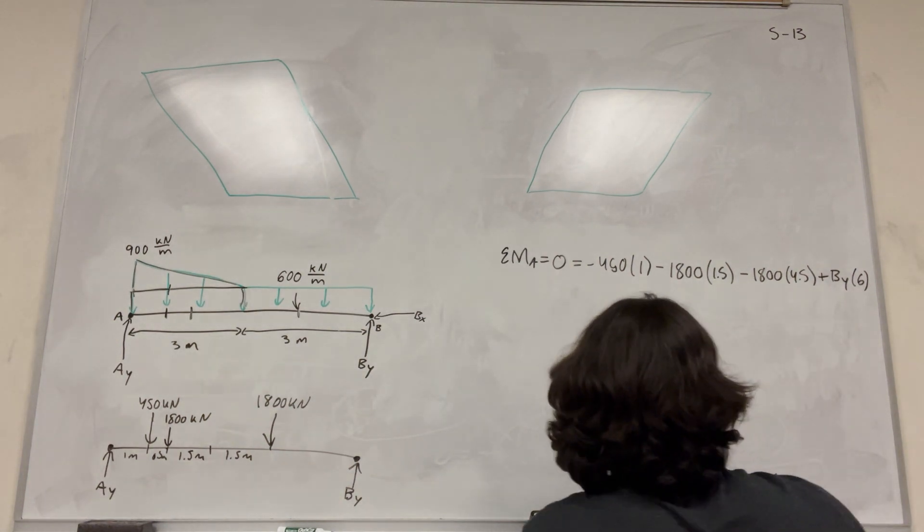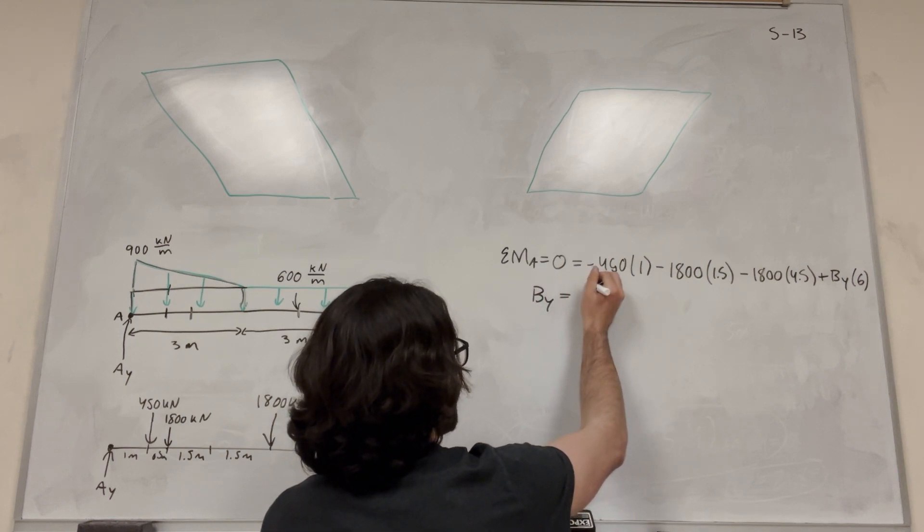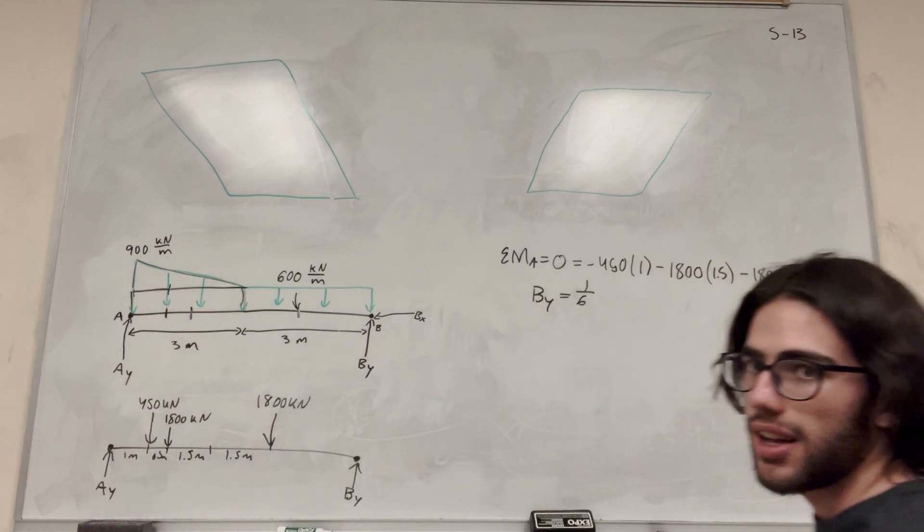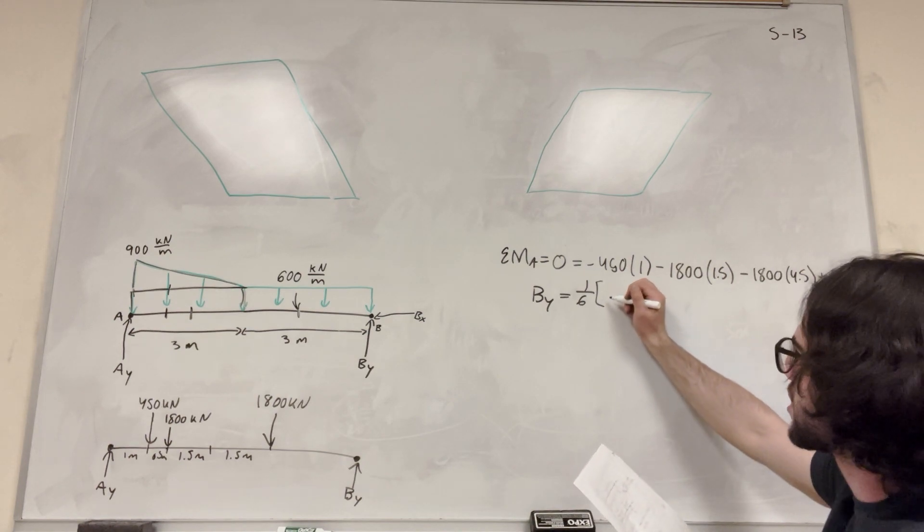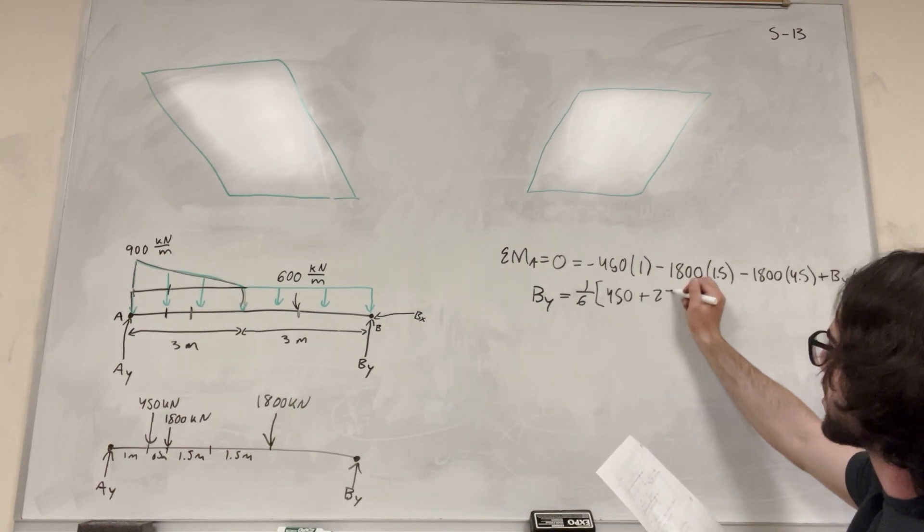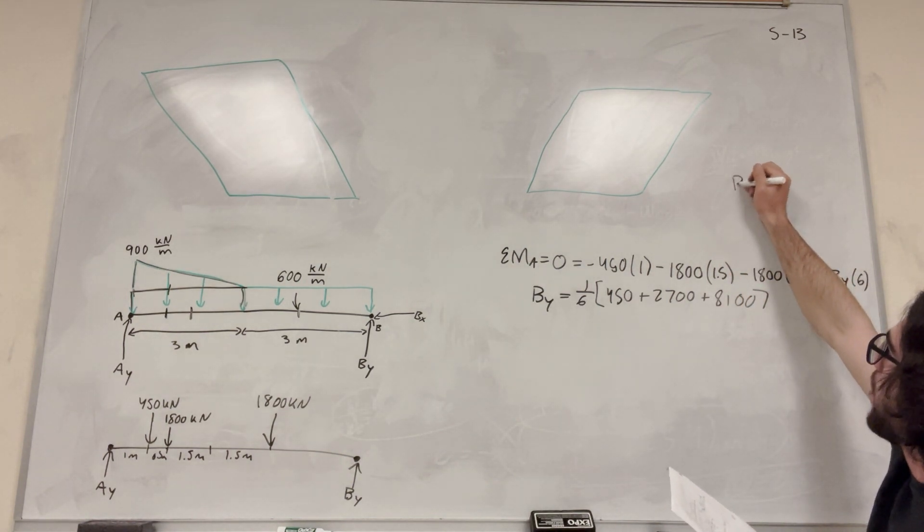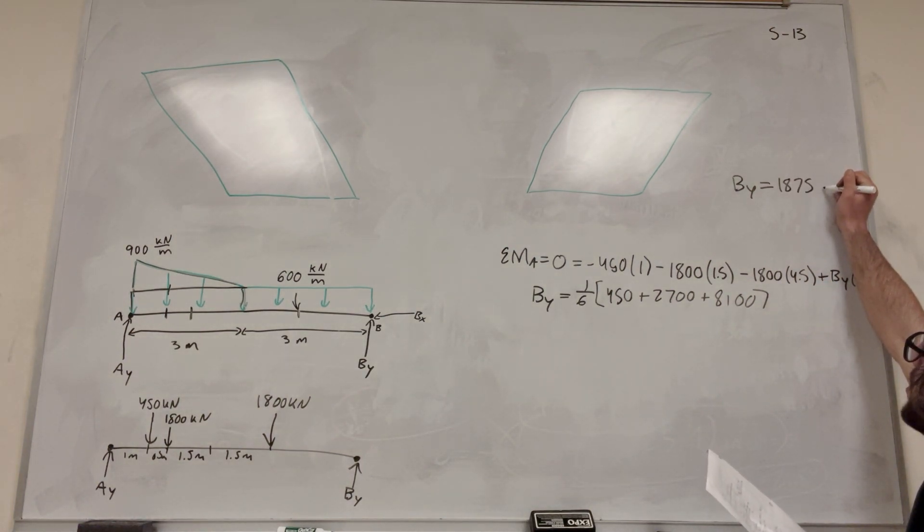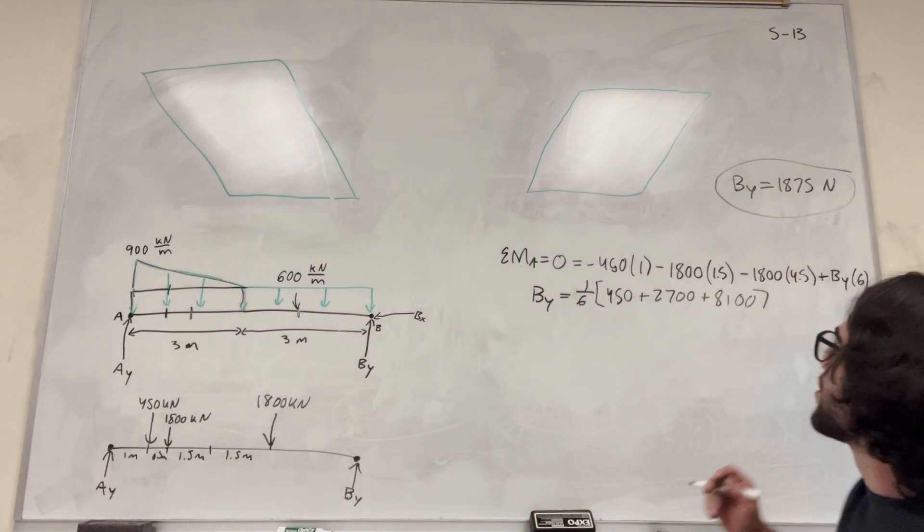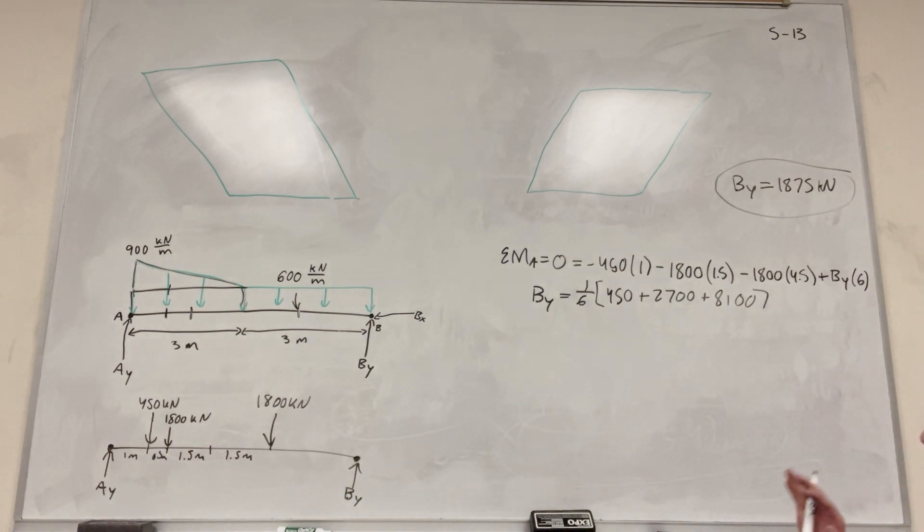So this is our equation. If we're going to move B over, so just by subtracting B to the other side, you're going to get 6B_y. I'm going to take B_y, and we're going to actually divide it by 6 really quick. I'm just going to simplify this equation. This should be pretty easy to solve for you. And then, of course, this is going to be 450 plus 2,700 plus 8,100. So we found B_y. Now we just need to find A_y.